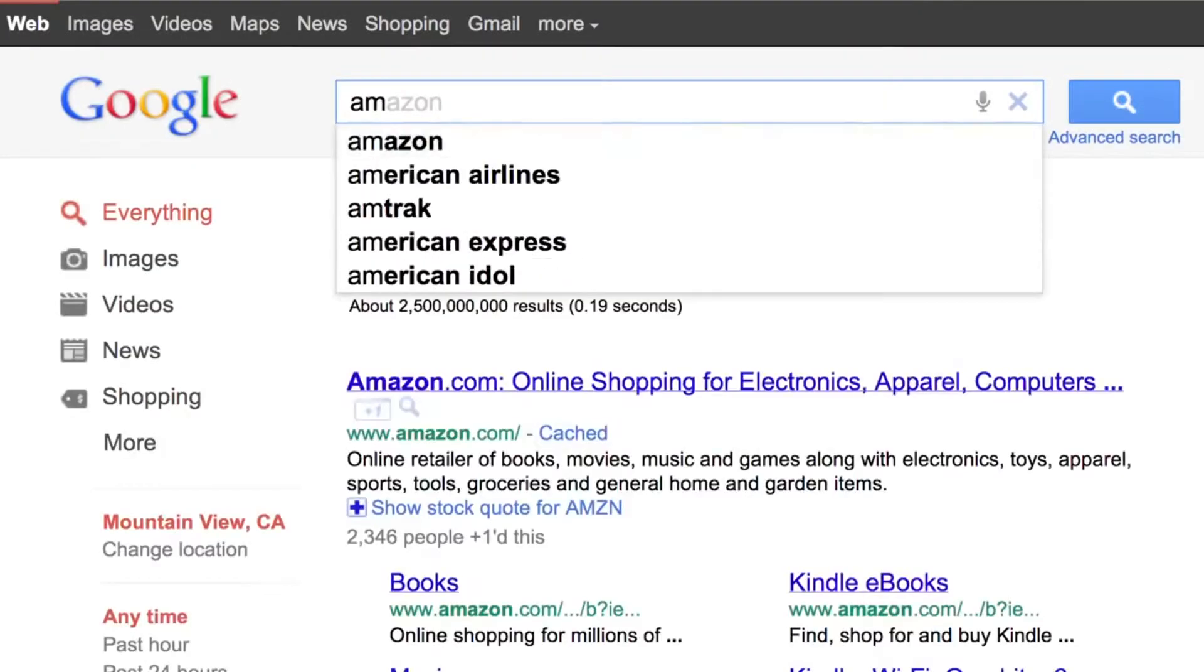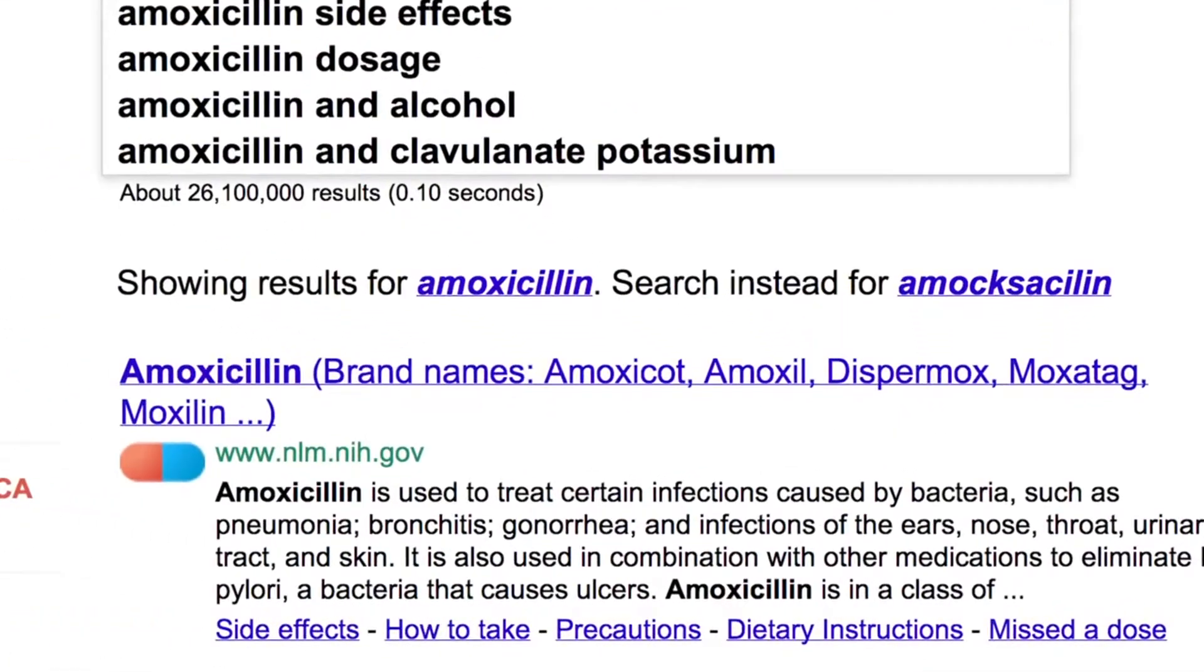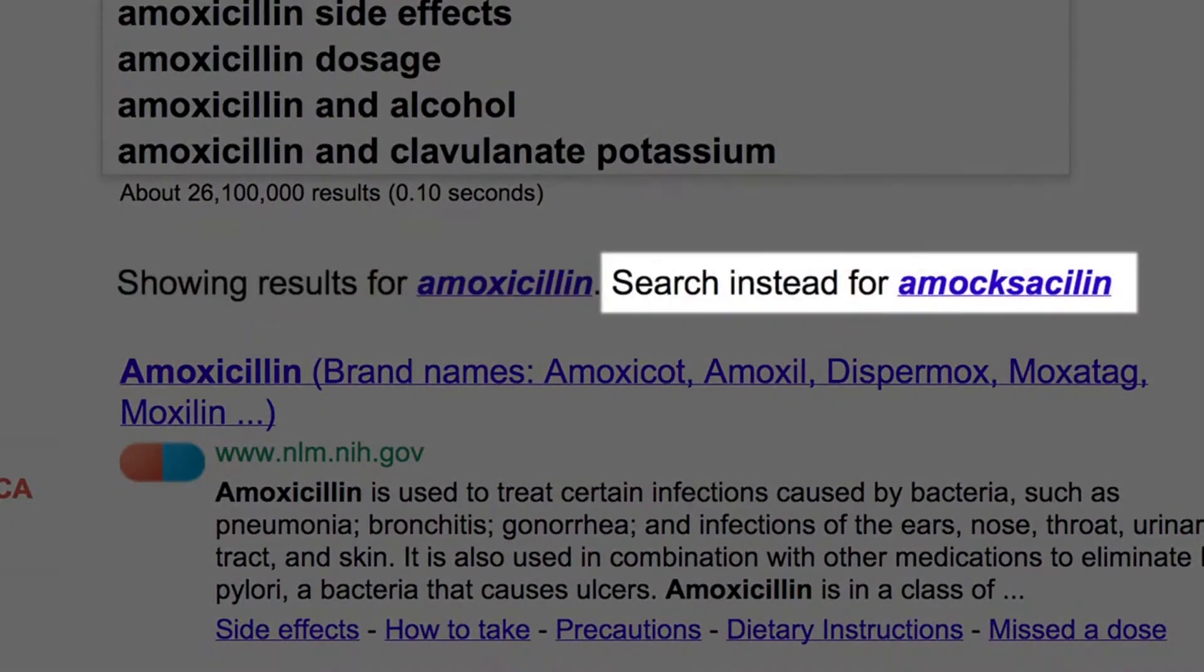So, we thought about a different kind of interface that we call full page replacement. And instead of did you mean, you'll see at the top of your page showing results for. And in the case that we made a mistake, there's another link, search instead for, and it has the query that you typed. We call that link the escape hatch.